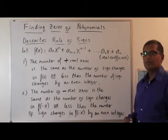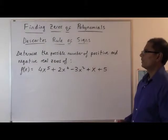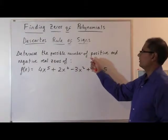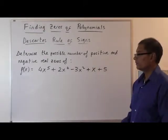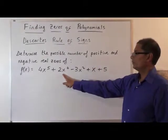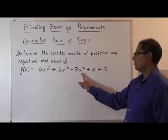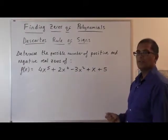So let's take a few examples. Using Descartes' rule of signs, we want to determine the number of possible positive and negative real zeros of this function: 4x to the fifth plus 2x to the fourth minus 3x squared plus x plus 5.